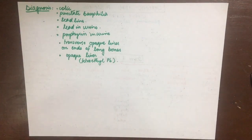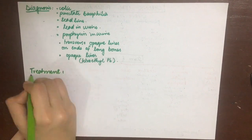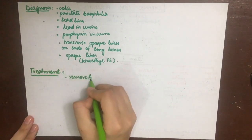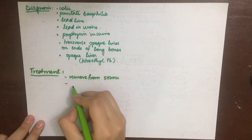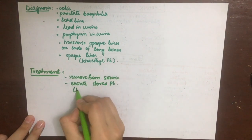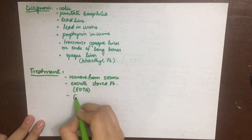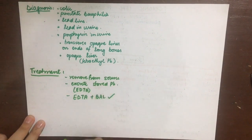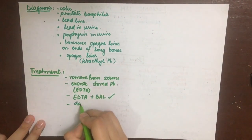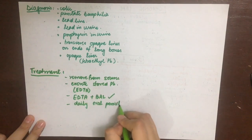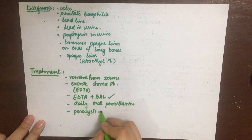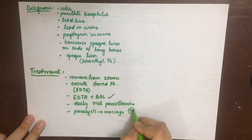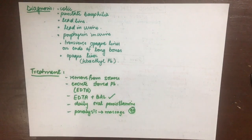To treat a chronic lead poisoning patient, first remove the patient from the source. Then we try to excrete the stored lead using EDTA and British Anti-Lewisite (BAL); their combination is more effective — they mobilize the stored lead and it is excreted in the urine. If lead paralysis has developed, massage to the affected muscles is helpful.